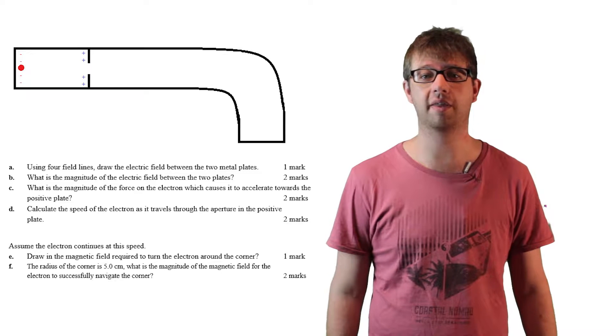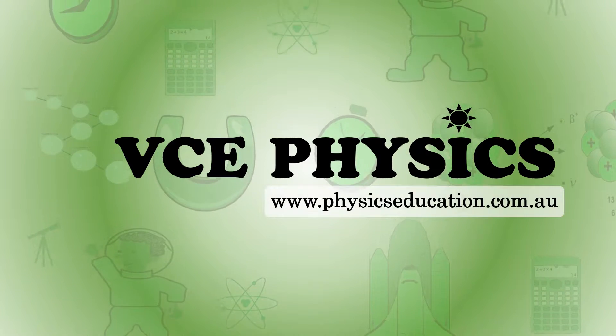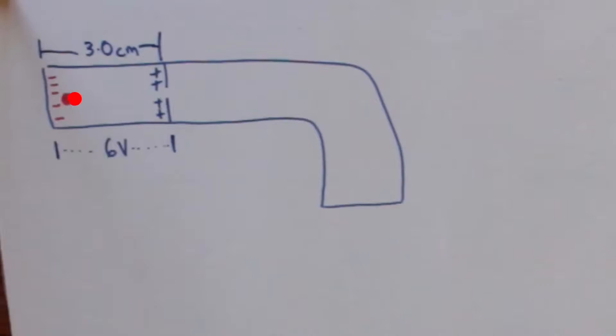Hi, today we're going to be applying the concept of an electric field. An electron is accelerated by the potential difference of 6 volts between the two plates, which are 3 cm apart. The electron then travels through a magnetic field which allows it to bend around the corner.